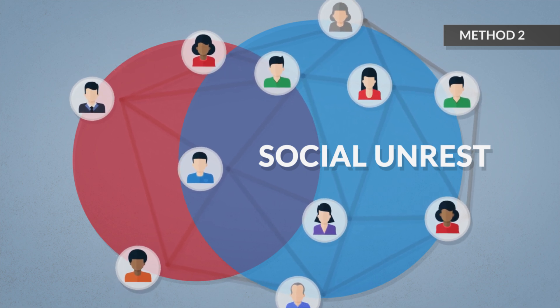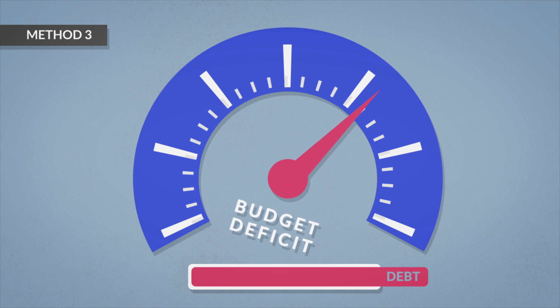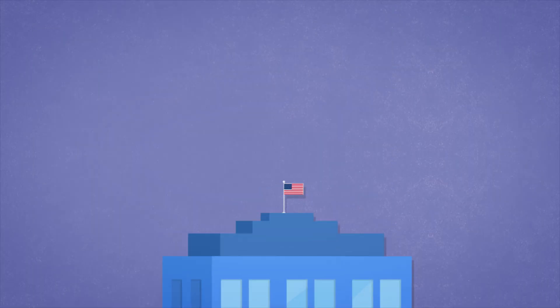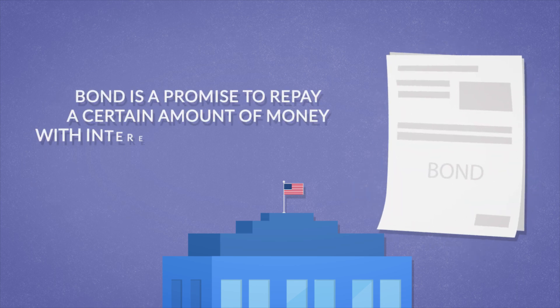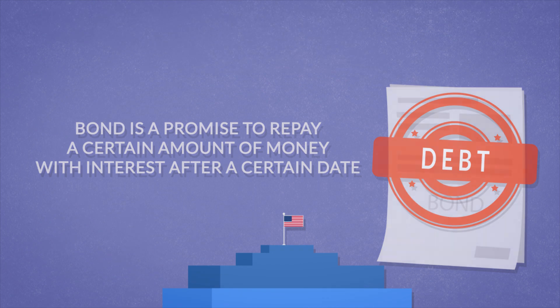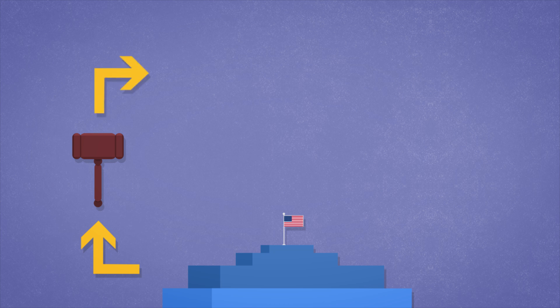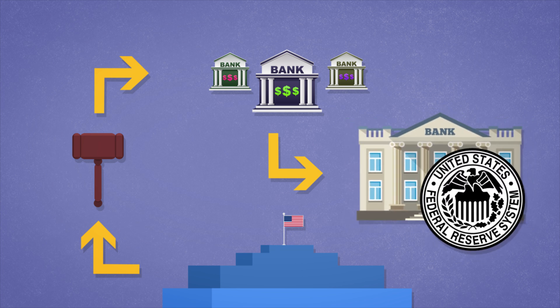However, there is another option. The government may increase the budget deficit and thus finance current expenditures at the cost of increasing debt. The U.S. Treasury can issue securities like government bonds. Simply put, a bond is a promise to repay a certain amount of money with interest after a certain date. It constitutes a debt obligation. The government bonds are sold to financial institutions at auction. By itself, issuing bonds doesn't necessarily lead to money creation — bonds can be bought by private individuals with previously saved money. However, some bonds are bought by means of open market operations by the Federal Reserve, which is the U.S. Central Bank.